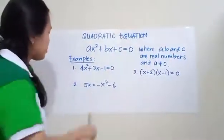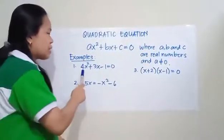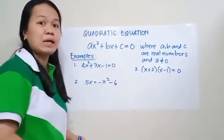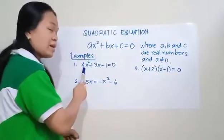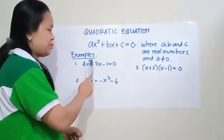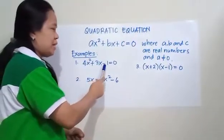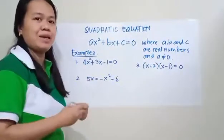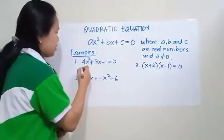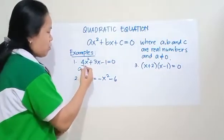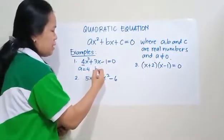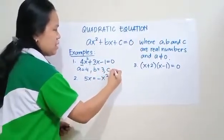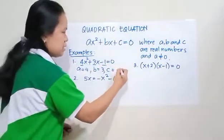So let's have an example. Number 1: 4X squared plus 3X minus 1 equals 0. So which of these is the quadratic term? In this equation, 4X squared is the quadratic term, 3X is the linear term, and negative 1 is the constant term. Now let us find the values of A, B, and C. So here, your A is equal to 4, your B is equal to 3, and C is equal to negative 1.